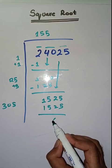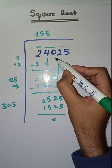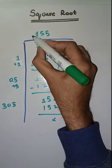So we have completely solved it. The square root of 24,025 is 155.